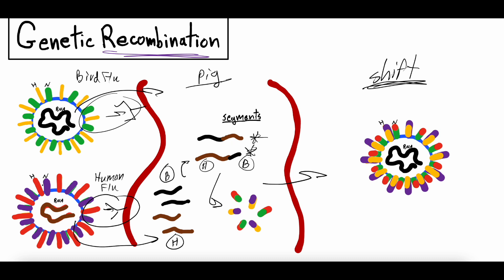That recombined RNA can lead to a whole new segment that's a combination of the two, creating new proteins that are a combination of both bird flu and human flu, and ultimately a virus with antigenic shift that is much different from the parent viruses. With recombination, bird flu's green and yellow receptors and human flu's purple and red receptors could produce a new virus with purple from human, yellow and green from bird, and red from human all combined. That can lead to a new virus that jumps out of animals and infects humans — which is why people are so concerned when animals susceptible to both bird and human viruses get infected by bird flu.